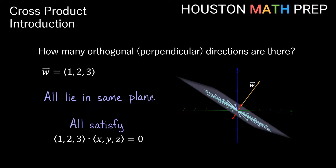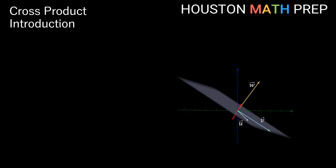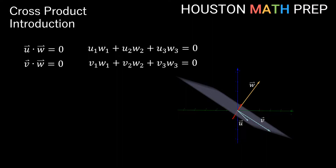If you remember the dot product from our previous video, we know that all vectors in the plane will have a dot product of zero with our vector w, because when two vectors are orthogonal their dot product equals zero. Let's pick two such vectors, u and v, from the plane. Since u and v are orthogonal to w, both u·w = 0 and v·w = 0.